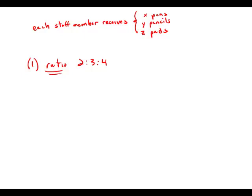We're not guaranteed that each person received exactly two pens, three pencils, and four pads. They're merely in that ratio. It could mean that, for example, each person receives 10 pens, 15 pencils, and 20 pads, multiplying that by five.